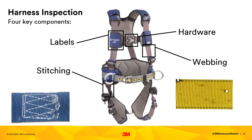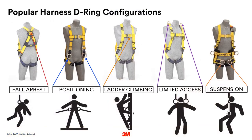Harnesses can be cleaned with mild soap and water and then air dried. Harnesses have a working weight capacity of 130 to 310 pounds. DBI Sala and Protecta harnesses are tested to 420 pounds. At a minimum, a harness must have a dorsal D-ring for fall arrest, normally referred to as the back D-ring. All other D-ring configurations are optional and dependent on the work to be done.